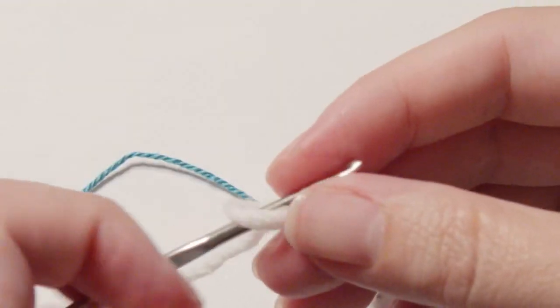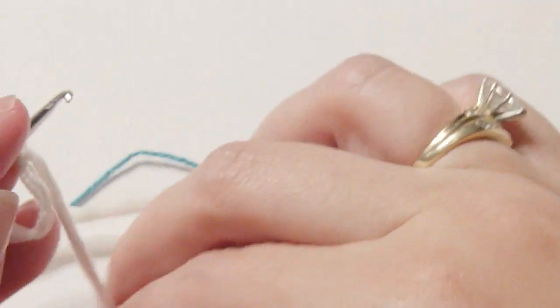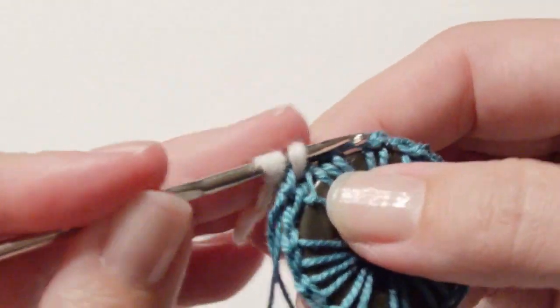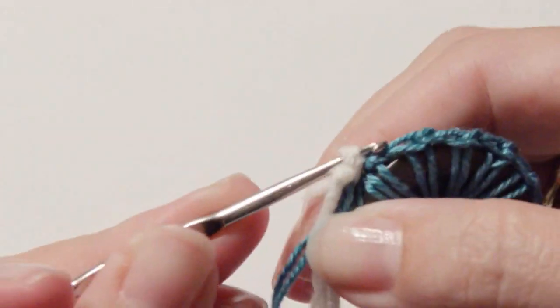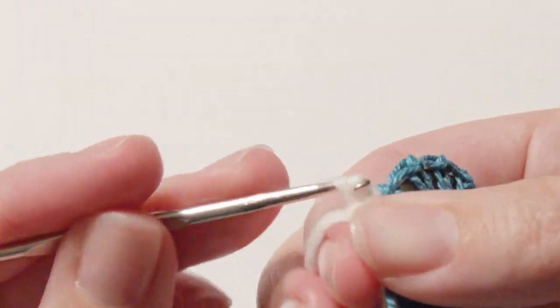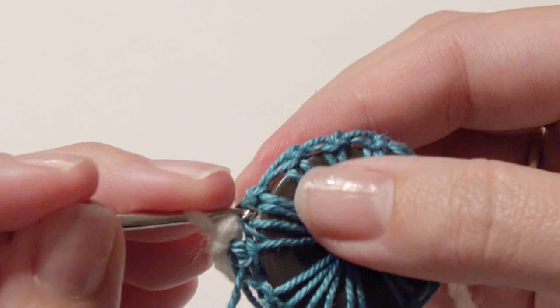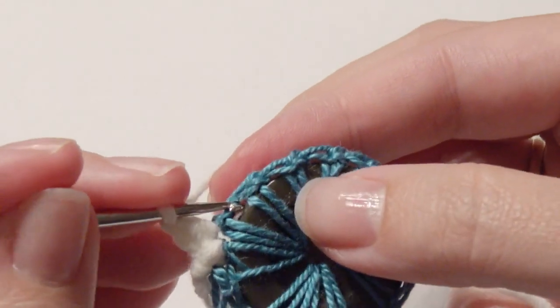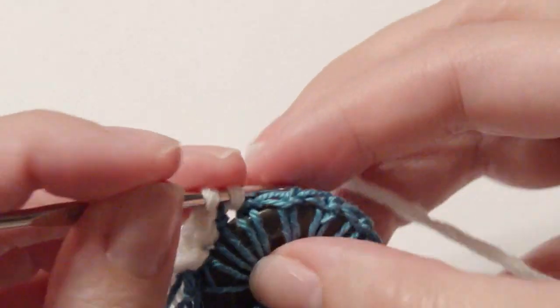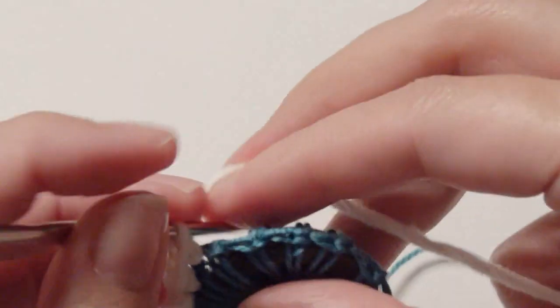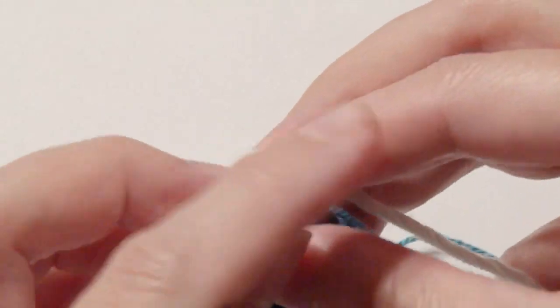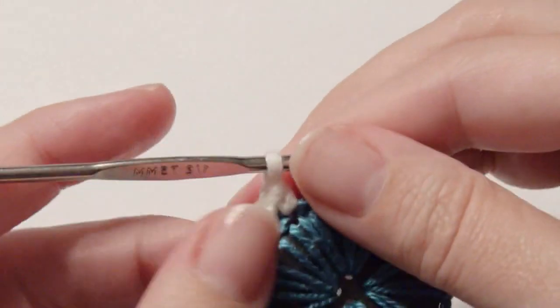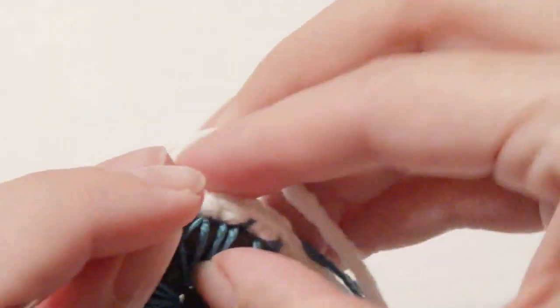Slip knot onto the hook and I'm using medium worsted white yarn. You can go up a little bit on the hook size if you like. I'm going to slip stitch in any stitch to get started. I'm just working a chain one and single crochet around in each space that I can find. So just single crochet, pull through two loops and chain one.